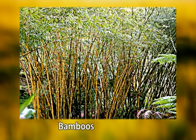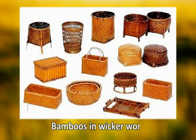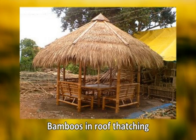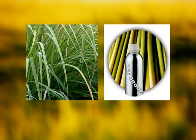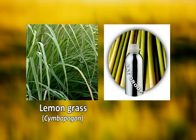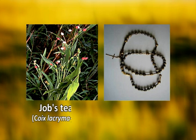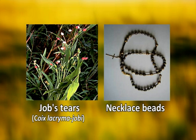The grass with a tree habit, Bambusa, commonly known as bamboo, is used extensively in construction works, wickerwork, and roof staging. Edible young bamboo shoots are used as a source of food, or can be used as a source of fiber for the paper industry or pulp for rayon making. A grass known as lemon grass, and also Job's tears (Coix lacryma-jobi), are used in making necklace beads.